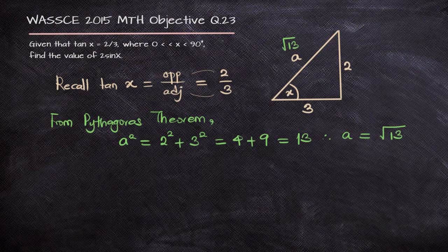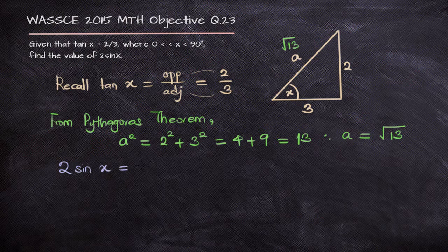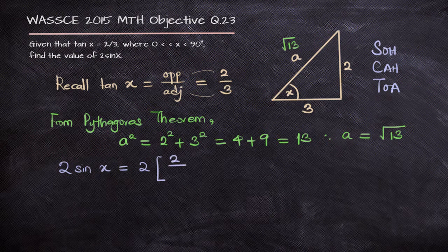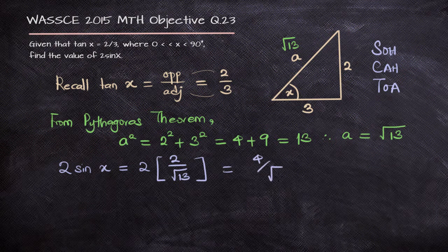Finding 2 sin x will be quite easy for us since all the sides have been clarified. 2 sin x — sin is opposite over hypotenuse, and that is 2 over a. We know sin is opposite over hypotenuse, so 2 sin x will be 2 into 2 over root 13, and that will be 4 over root 13.